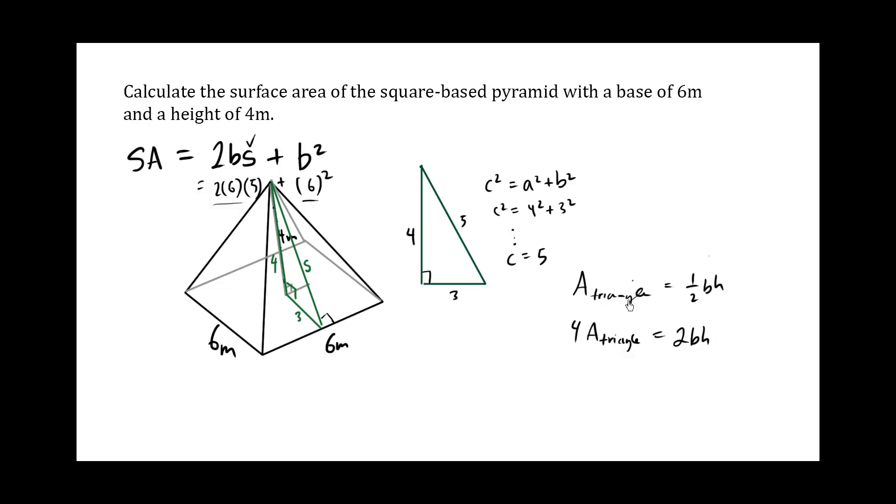Now what is our H? If I'm looking at this triangle here, our H is the S. So essentially we have 2Bs. That's where the formula comes from. It's from the idea that you have 4 of these equal triangles.